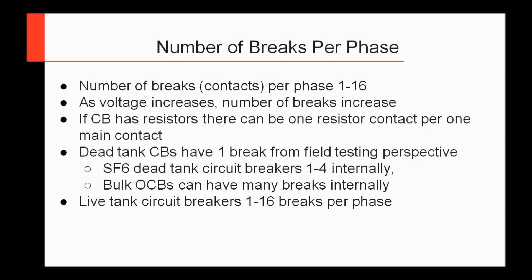When I talk about breaks, these are the main contacts. You can also have a resistor in there, so you could theoretically have 16 main contact breaks and 16 resistor breaks per phase. Now, a dead tank circuit breaker from the field testing perspective has only one break per phase — you go up and hook to both bushings on both sides. But internally, these can actually have anywhere from one to about four breaks. Same thing with bulk oil circuit breakers — from a field testing perspective they're one break per phase, but they can have multiple breaks inside.